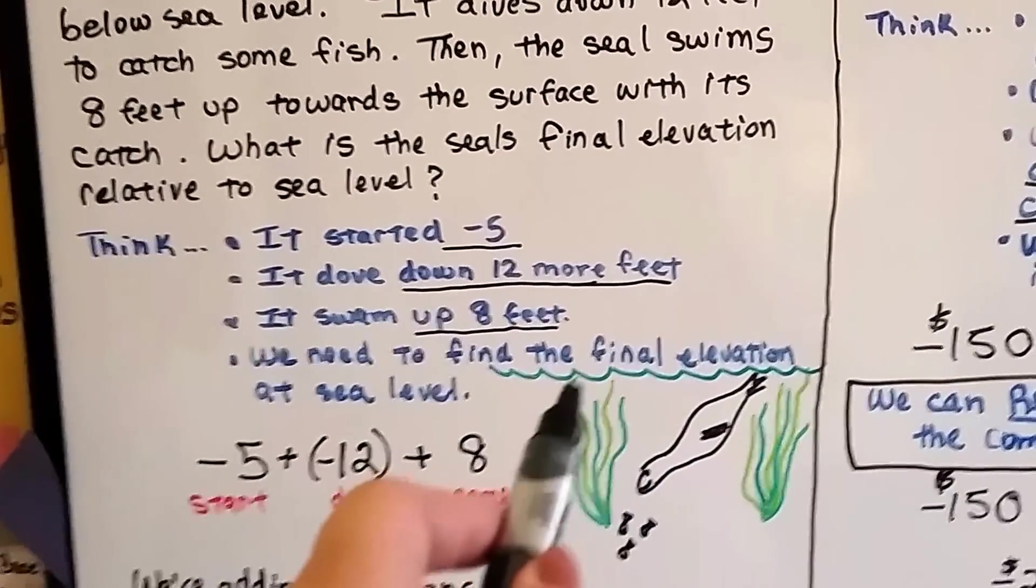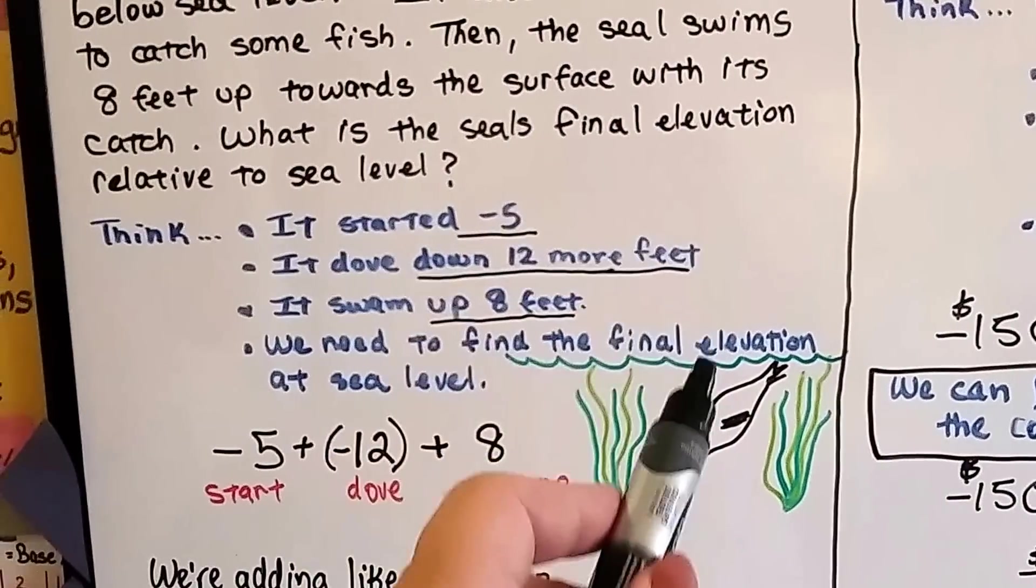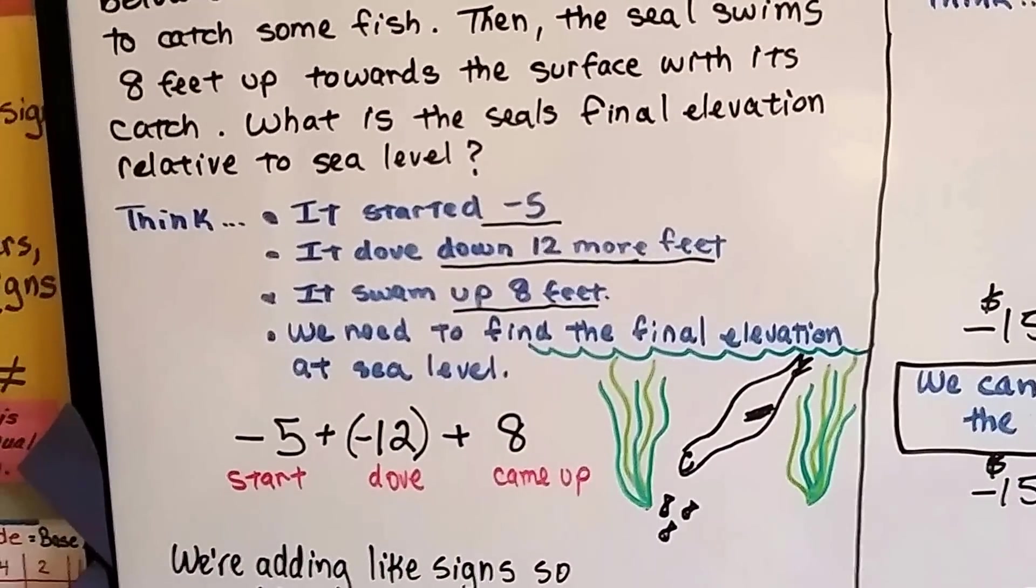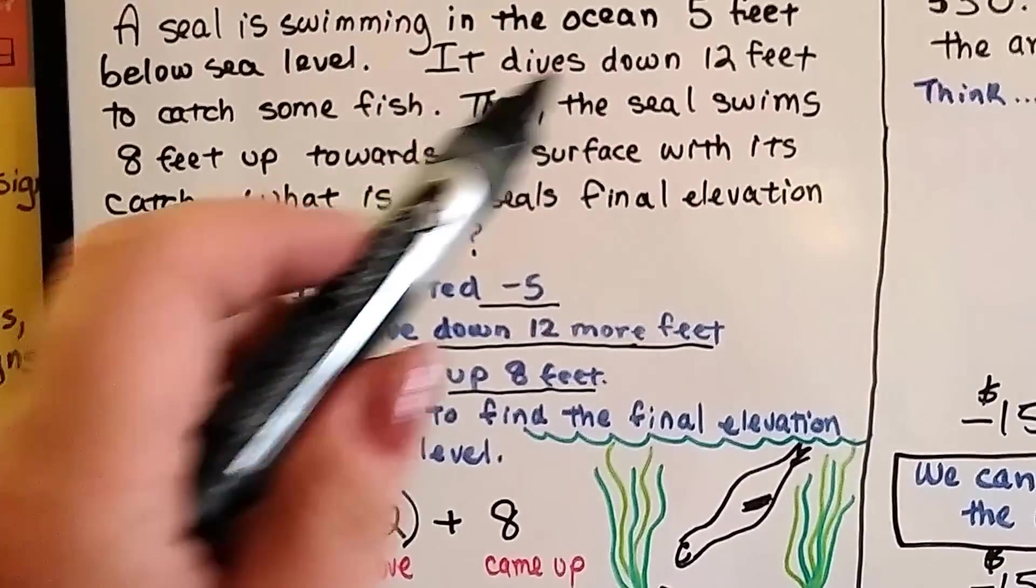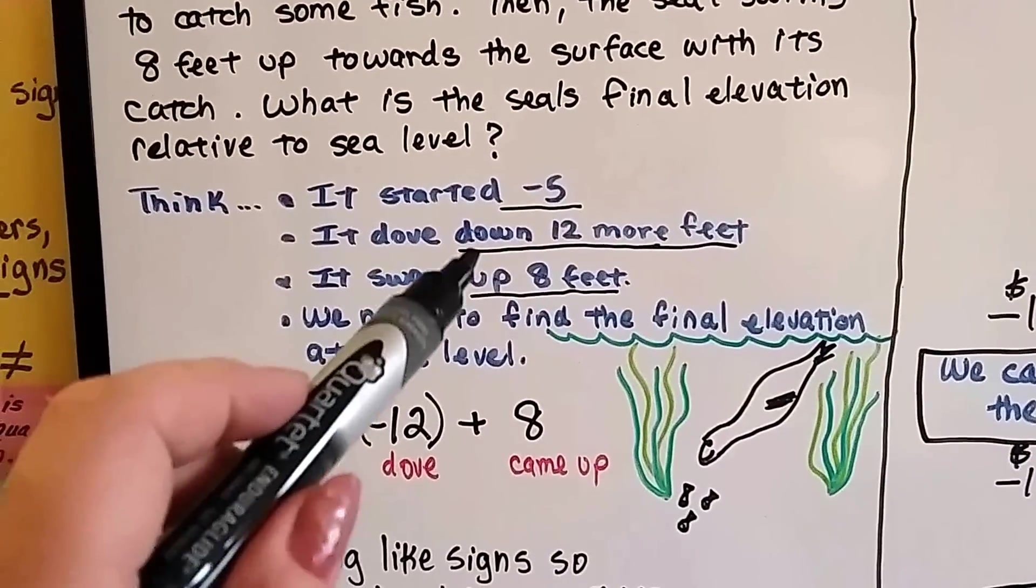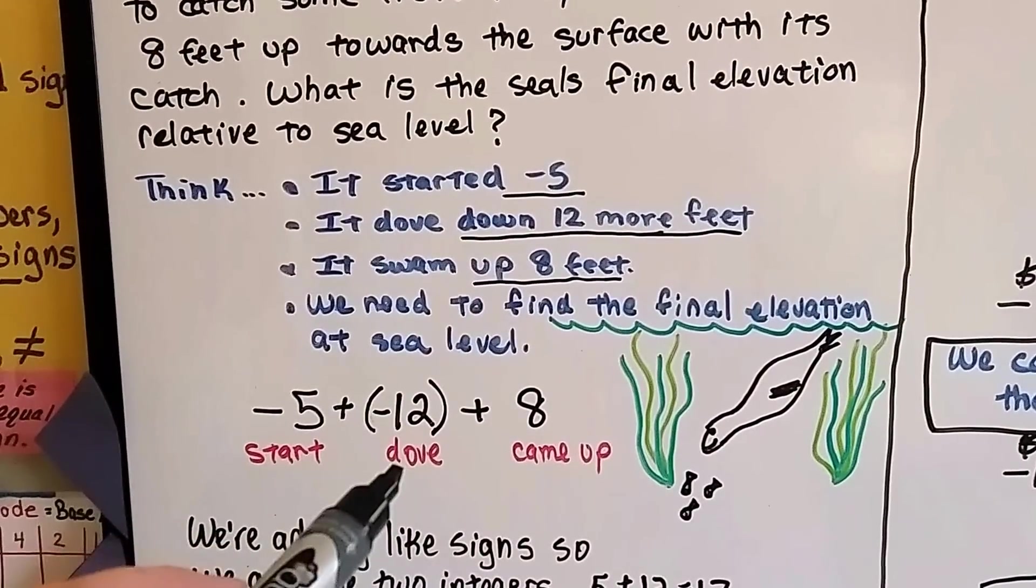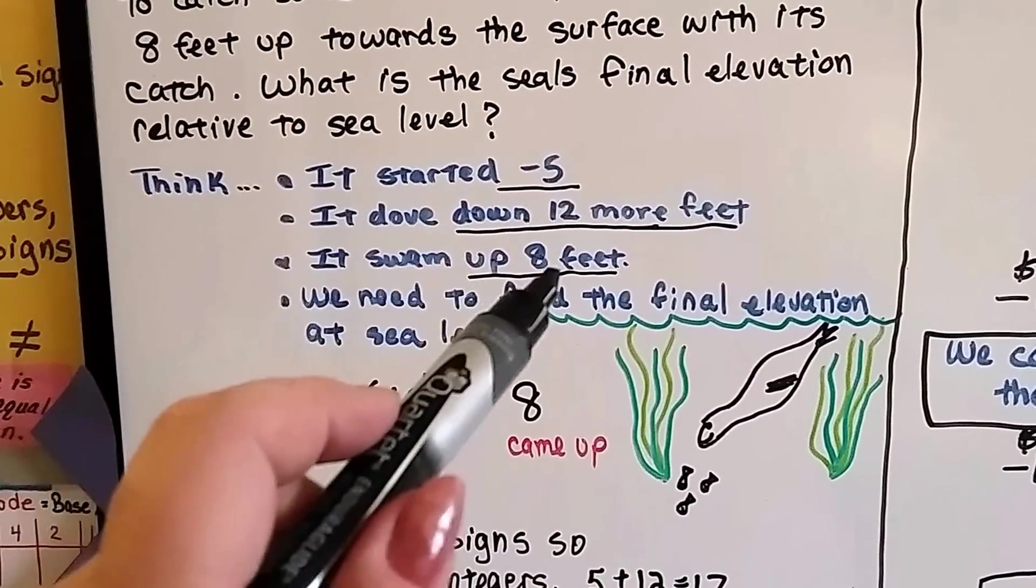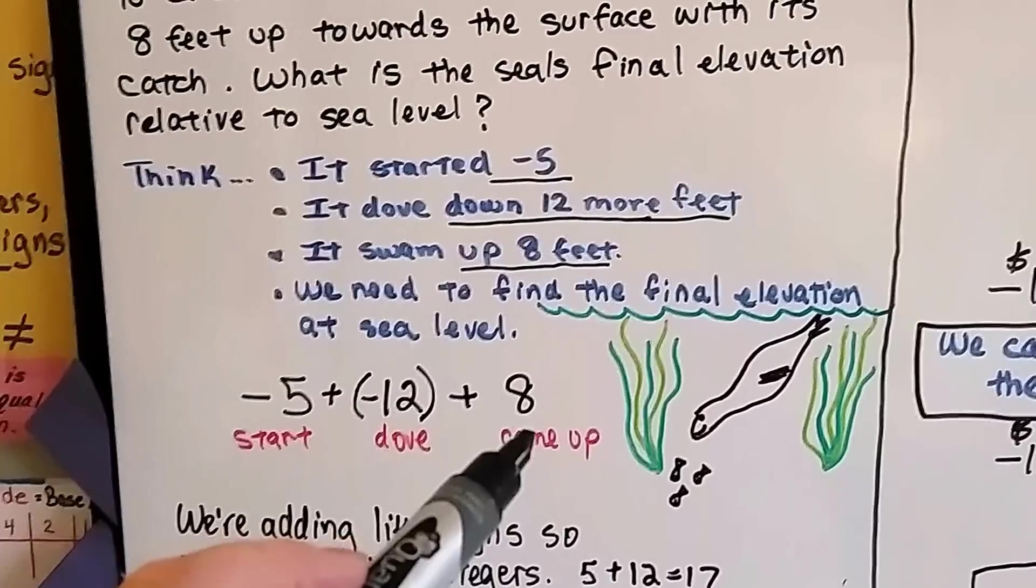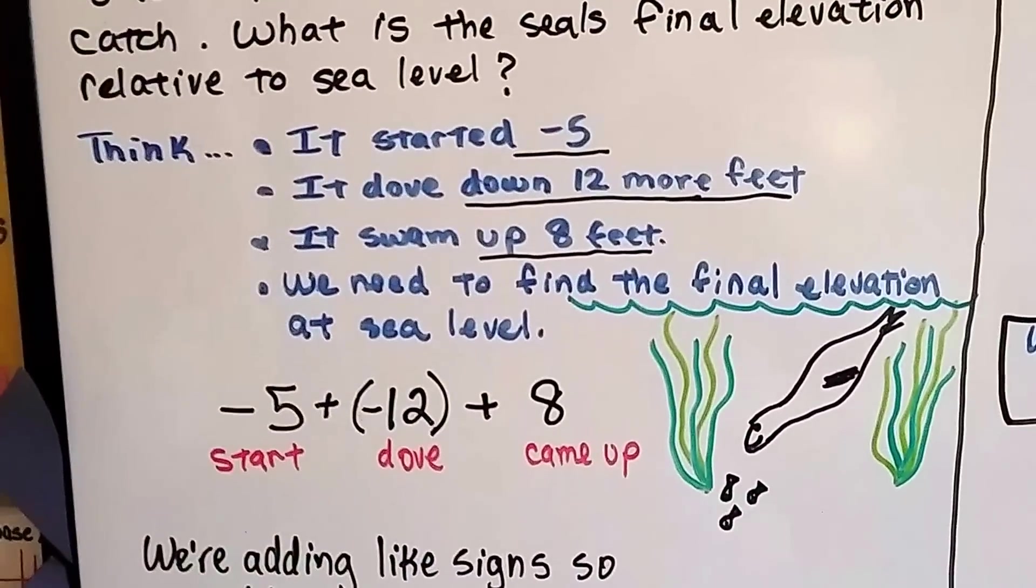Sea level is the level of the sea. That's the zero line. Anything above it is positive, and anything below it is negative. So it started 5 feet below sea level, so it's negative 5. It dove down 12 more feet, so we're going to add a negative 12 for the 12-foot dive. Then it swam up 8 feet, so we're going to add an 8 for its swimming up. And we need to find the final elevation at sea level.